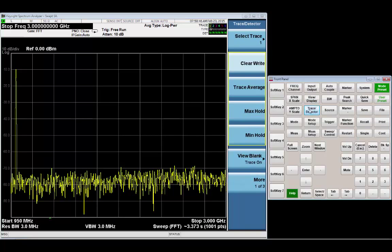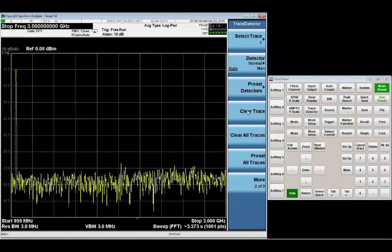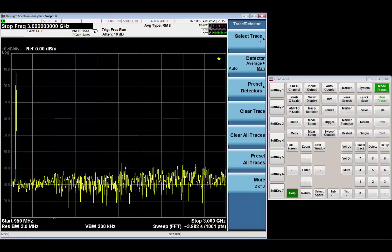And I can even change my detector type to average, which will clean that up a little bit. And then I'll get a better view of my harmonic.